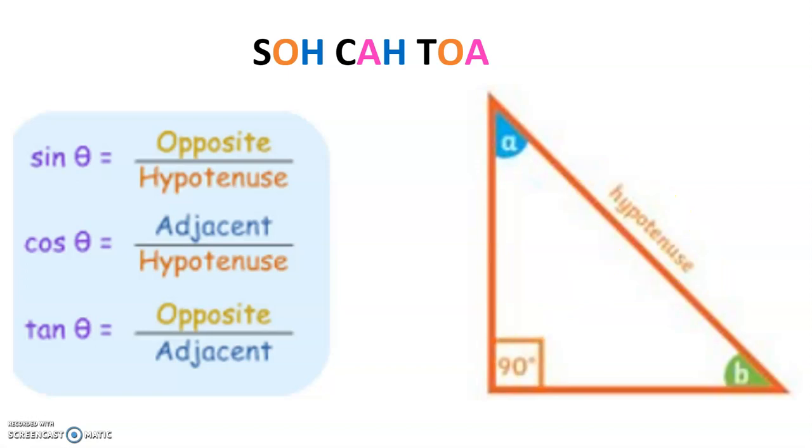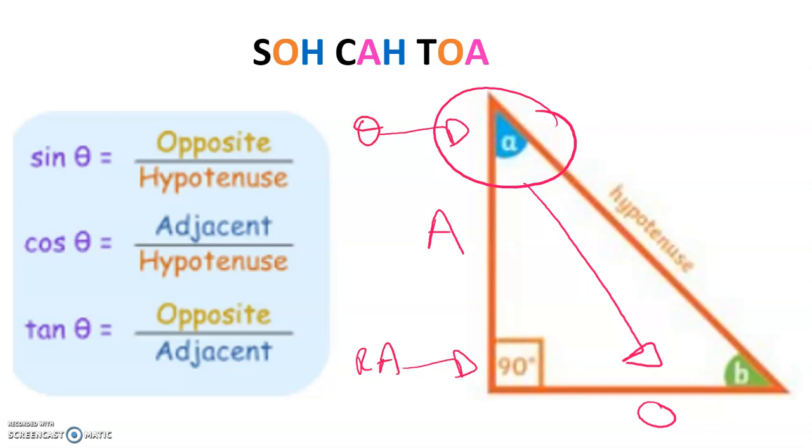The adjacent and the opposite depend on which angle you are using or which angle you're trying to find. For example if I'm using this one here the opposite is going to be over here because it has to be opposite the angle and the adjacent is what is left and it's always in between the right angle here and the angle I'm using.